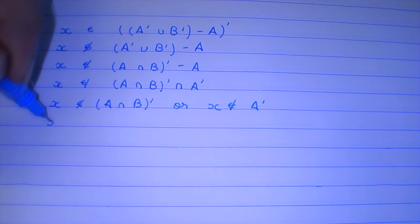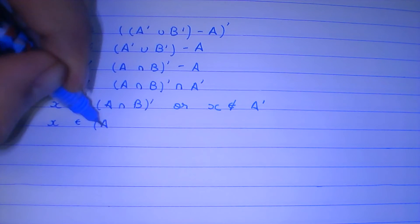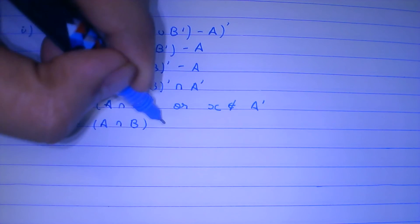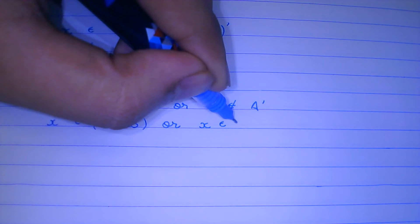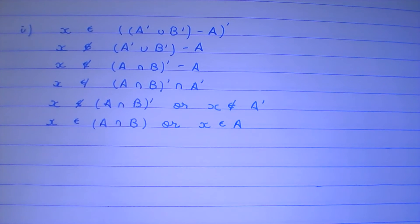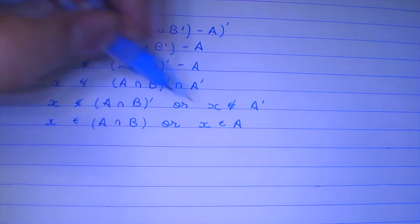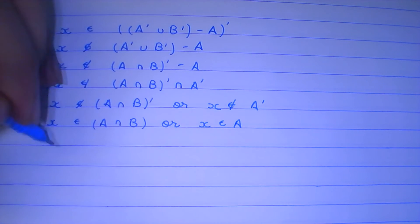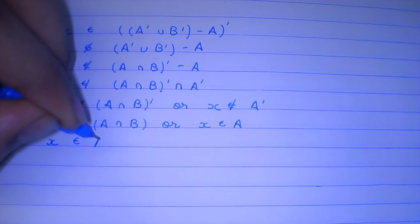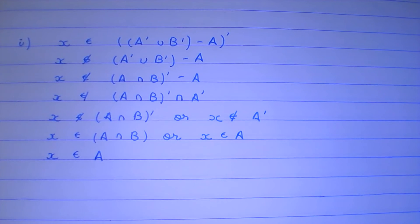Which means that x belongs to A ∩ B, or x belongs to A. Now look at this — A ∩ B is definitely going to be a subset of A. That's obvious. And since x either belongs to a subset of A or x belongs to the whole of A, we can easily conclude that x belongs to A. See how much we have simplified it.